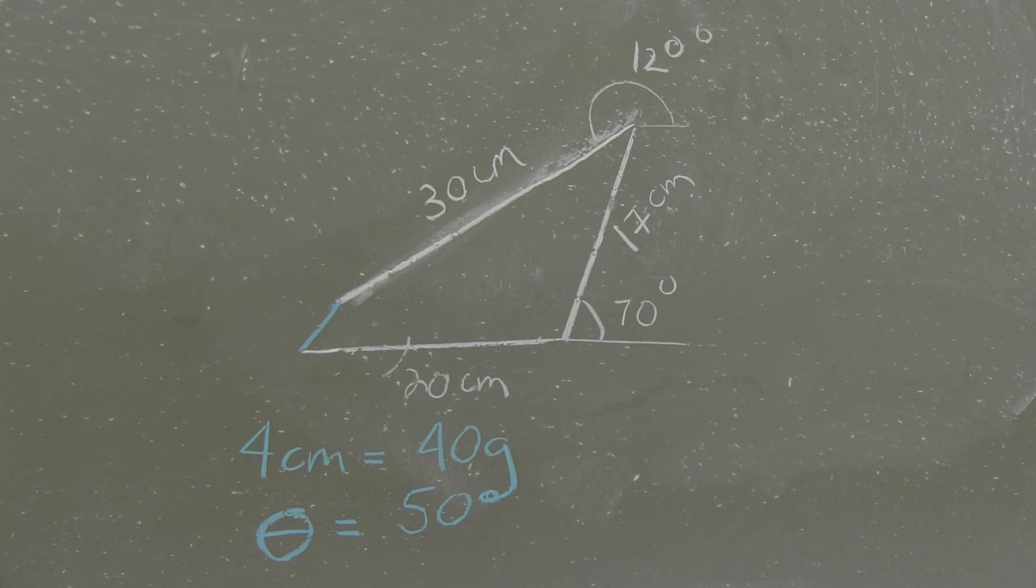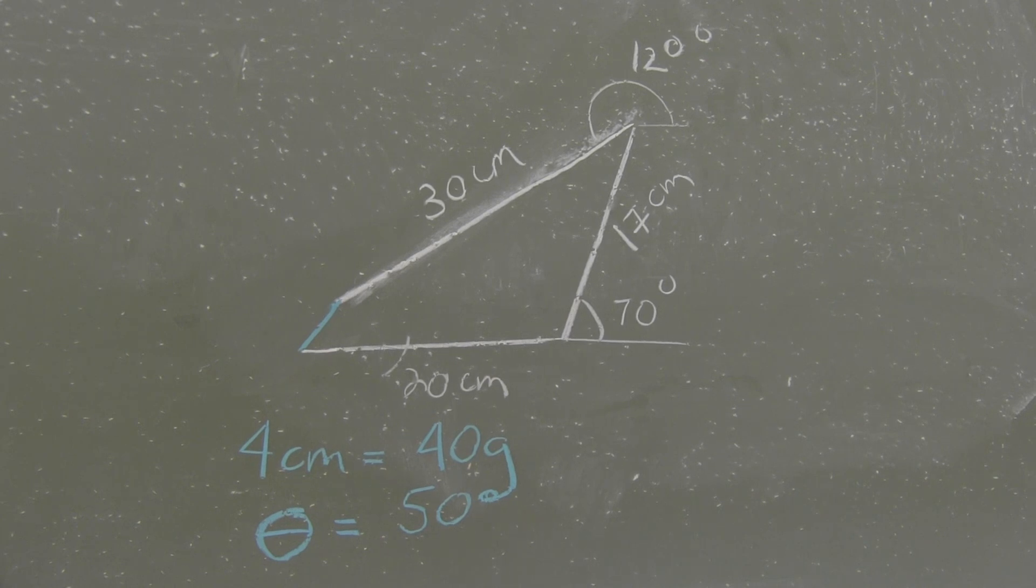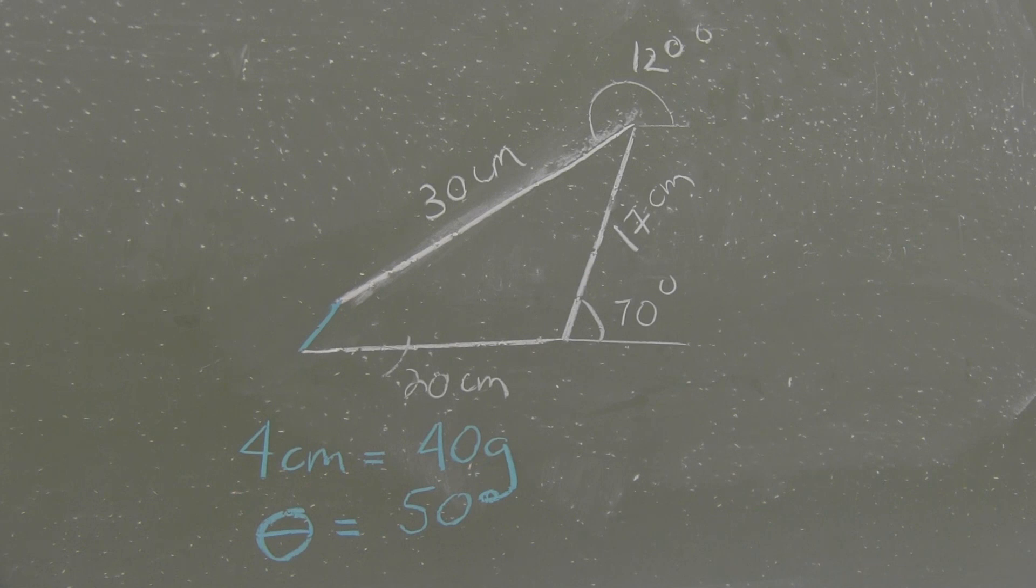Converting that back into our scale, four centimeters equals 40 grams. So our resultant vector will be 40 grams at 50 degrees.